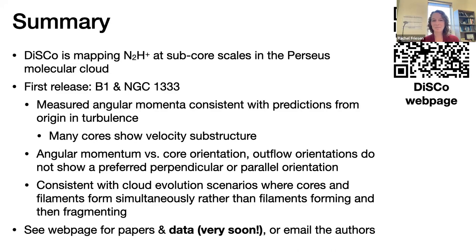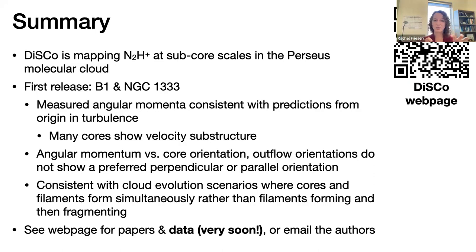Q&A: Can closely adjacent cores influence each other's collapse, for example in binary formation? We do have some cores where two cores are identified very close together. There is a trend that larger cores tend to have more dispersion in the pixel-by-pixel velocity gradient orientation. We'd like to disentangle whether larger cores are more likely to be doubles in the dataset, and whether there's an interaction between adjacent cores — something we'd like to investigate in more detail.